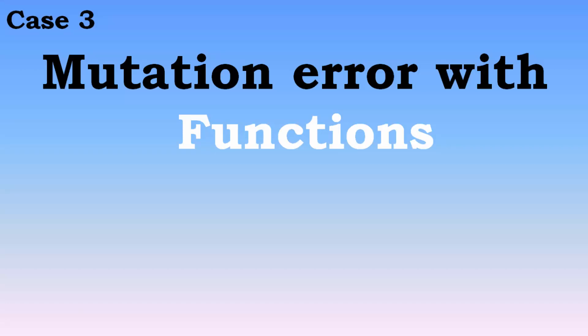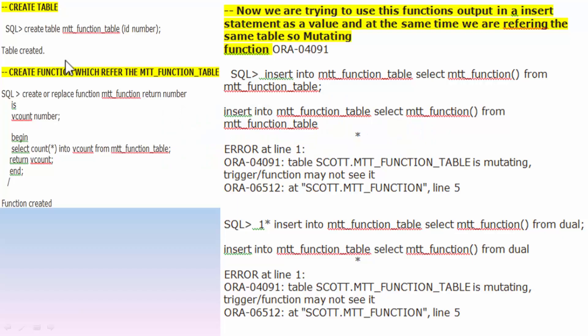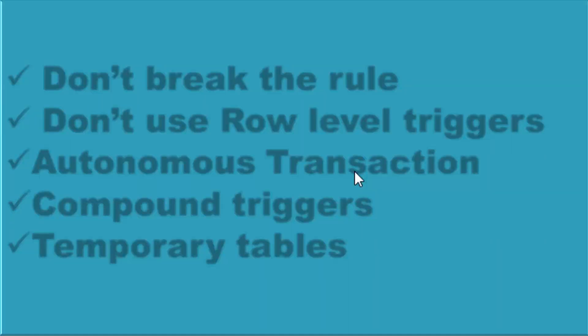Here we create one table and one function which simply tries to access all records from the table. We then use this function's output in an insert statement as a value, and at the same time we are referring to the same table — so a mutation error occurs.